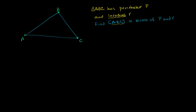Let's remind ourselves what the inradius is. If we take the angle bisectors of each of the vertices — bisecting each angle so that this angle equals that angle, this angle equals that angle, and this angle equals that angle — the point where those angle bisectors intersect is our incenter, and it is equidistant from all three sides.